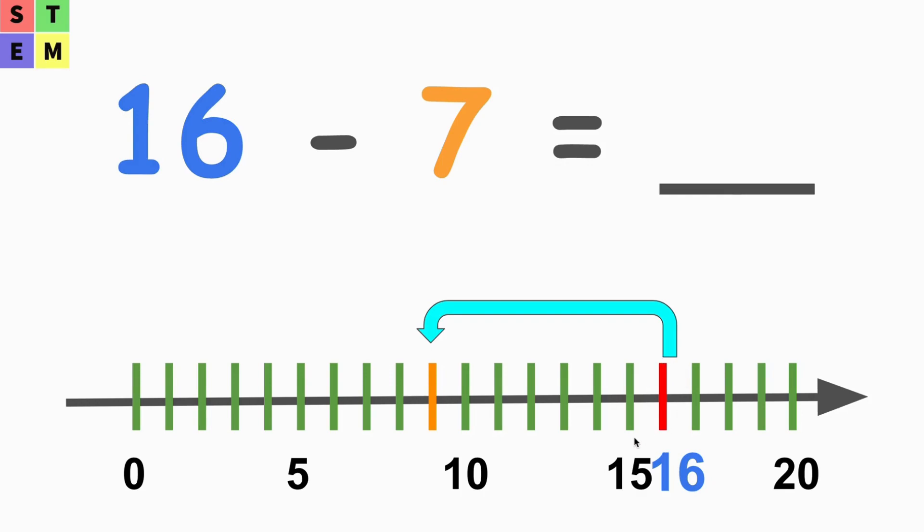So what we're gonna do with minus 7? As you can see, the arrow here I already put will be minus 7, but how do we know that? Let's count.